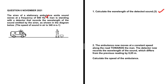If the ambulance is stationary, the detected sound will have the same frequency the ambulance is emitting, because there is no relative motion between the sound source and the observer. So the frequency detected equals the velocity divided by the wavelength. The frequency detected is the same as the frequency emitted — 680 hertz — and the velocity, the speed of sound in air, is 340 meters per second.